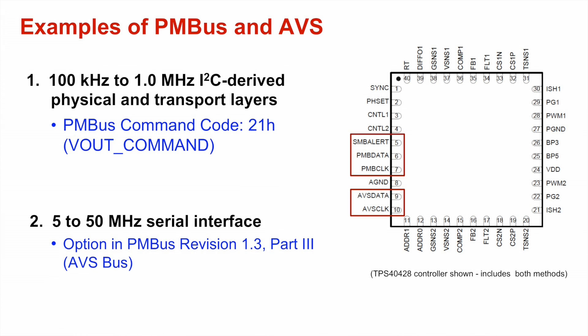The first method uses the basic 100 kHz to 1 MHz I2C physical and transport layers with a command code to actively set the output voltage. The second method uses a 5 to 50 MHz serial interface recently introduced as AVS-BUS.